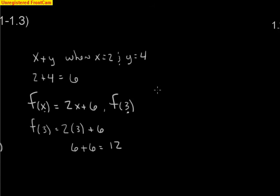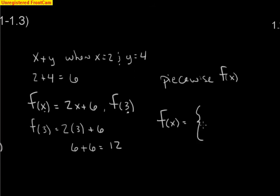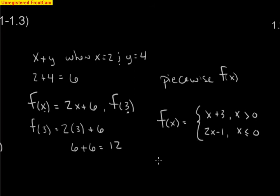One of the bonus problems is what we call a piecewise function. It looks complicated but it's really not. For example, F of X equals X plus 3 if X is bigger than 0, and 2X minus 1 if X is less than or equal to 0. You have two different rules. If numbers are bigger than 0, you use the first rule. So for F of 2 — is 2 bigger than 0? Yes. Plug it into the top: 2 plus 3 gives 5.